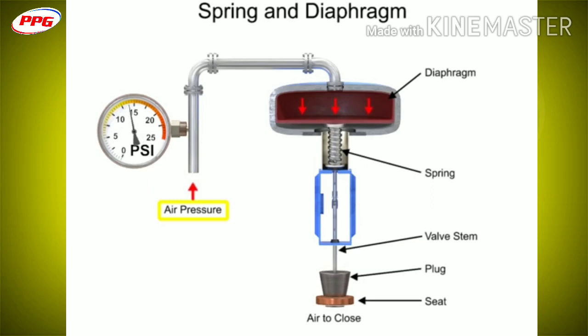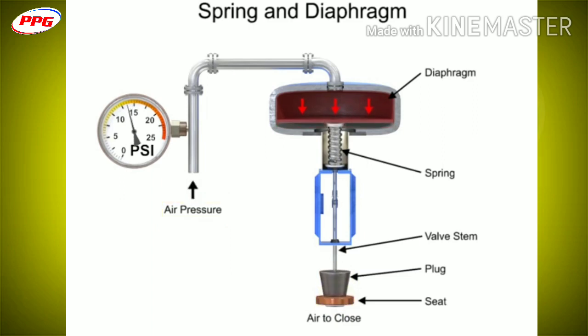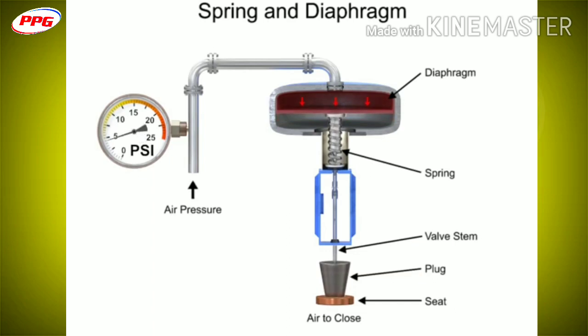The diaphragm moves until it creates an equal but opposing force against the spring, at which time the motion stops as the plug meets the valve seat. With no air pressure, the restrictor is pushed upward by the spring to act as a normally open control valve.